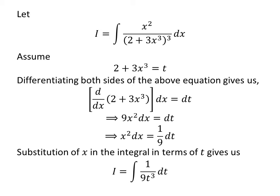In the integral i, let us substitute (2 plus 3x³) by our assumed value t, and x² dx by (1/9) dt. So i is equal to the integral of 1 upon 9 times t³ with respect to t.